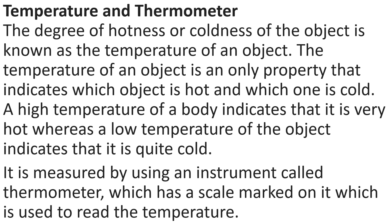The degree of hotness or coldness of the object is known as the temperature of an object. The temperature of an object is the only property that indicates which object is hot and which one is cold. A high temperature of a body indicates that it is very hot whereas a low temperature indicates that it is quite cold. It is measured by using an instrument called a thermometer, which has a scale marked on it, which is used to read the temperature.